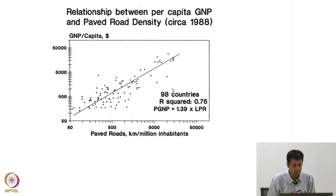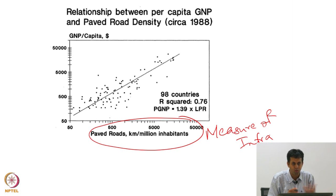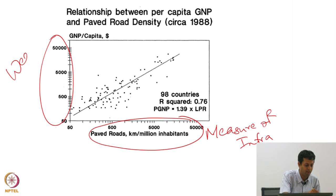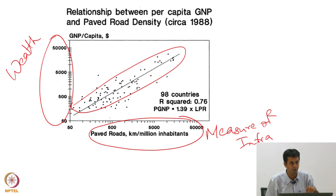You will recall we talked about this yesterday — this here is a measure of a country's infrastructure, the x-axis being paved roads per capita. Countries with better infrastructure have more paved roads per capita or per million inhabitants; countries with poorer infrastructure have less. There is a really nice correlation happening here — things are along the diagonal — so infrastructure and economic growth are correlated. We don't know the direction of causation: perhaps richer countries have more money to spend on infrastructure, or perhaps countries that spend on infrastructure become richer.